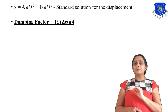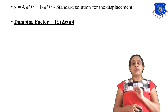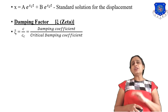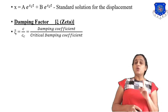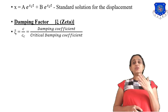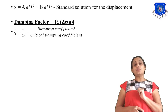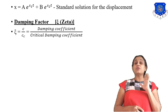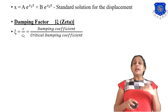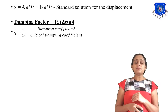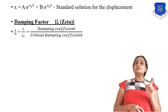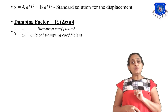Now we introduce the damping factor, known as zeta (ζ). Zeta is defined as the ratio of damping coefficient c to critical damping coefficient cc. We need to find the critical damping coefficient — it is the value at which zeta equals 1, which occurs when roots s1 and s2 are equal.